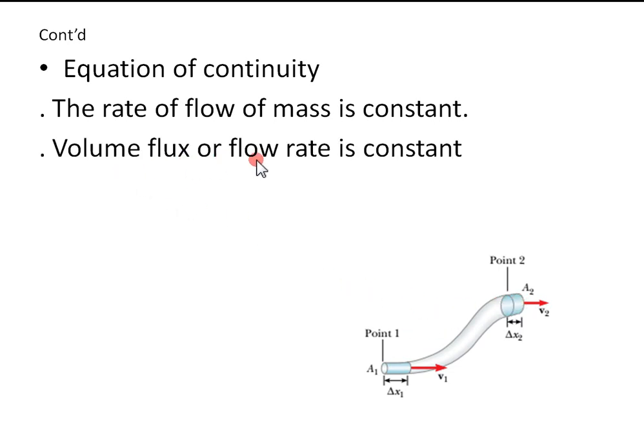In other words, we say volume flux or flow rate is constant. Delta v over delta t is constant. Delta v over delta t equals the cross-sectional area of the pipe times the speed at that cross-section, so AV.